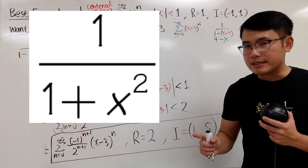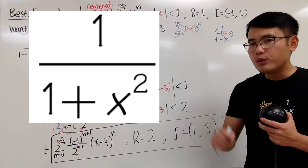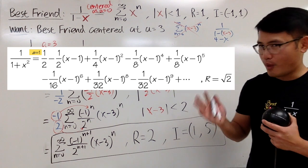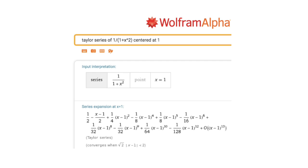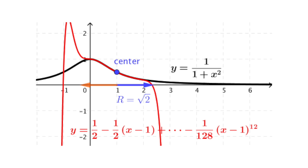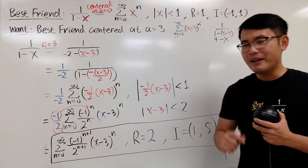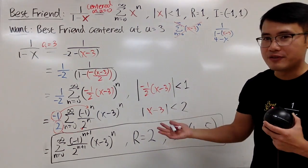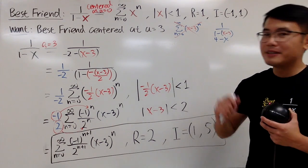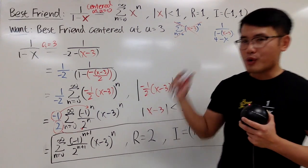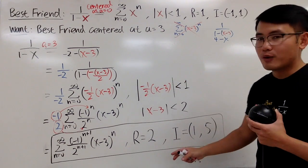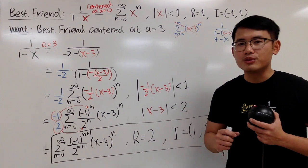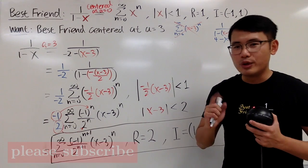However, if you look at the power series expansion for 1 over 1 plus x squared at a equal to 1, this is the power series now. And the radius of convergence is actually square root of 2. Right? And unfortunately, there's nothing that you can do like this right here from our best friend to get that. Maybe I'll do another video for you guys. But that's the point. When you move the a around, you have to be really careful with the radius of convergence. Sometimes, this might still work nicely like this. But just like the 1 over 1 plus x squared situation, you really have to do more work to figure out the radius of convergence.